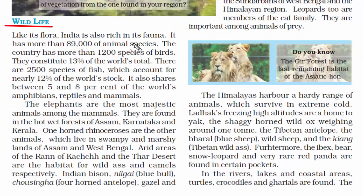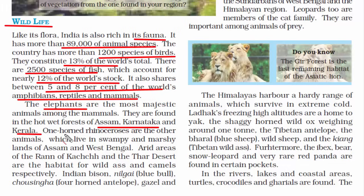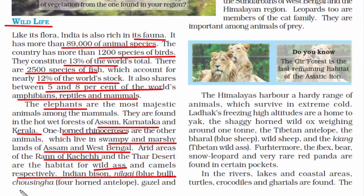Wildlife is also called fauna. India has an enormous diversity of animal species — 89,000 varieties in total. There are 1,200 species of birds, constituting 13% of the world's total, and 2,500 species of fish, accounting for 12% of the world's stock. Another 5–8% of the world's amphibians, reptiles, and mammals are found in India. You can find elephants in Assam, Karnataka, and Kerala; one-horned rhinoceros in the swampy and marshy lands of Assam and West Bengal; and wild asses and camels near the Rann of Kutch in Gujarat.